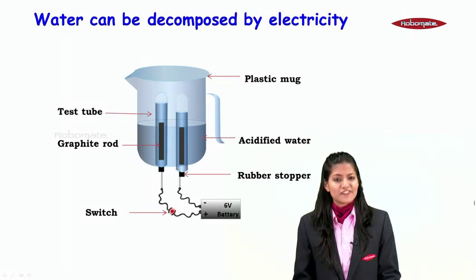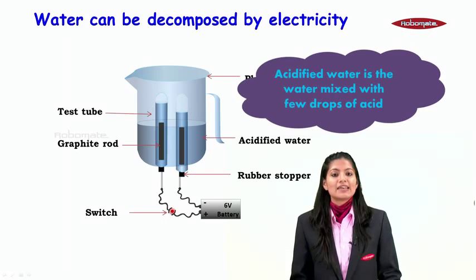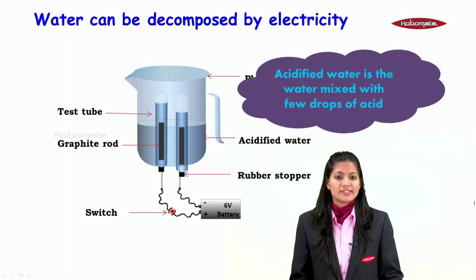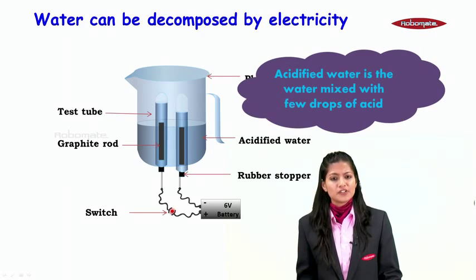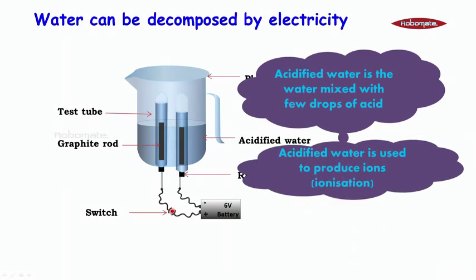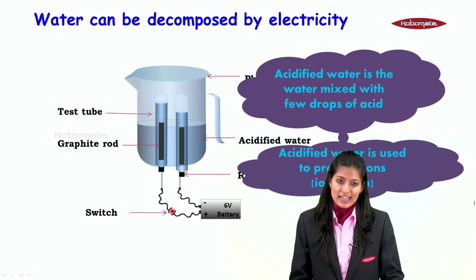But what is this acidified water? Acidified water is the water mixed with few drops of acid. And what is the need for the acidified water? Answer is very simple. Acidified water is used to produce ions, that is for the process of ionization, because when there are ions then only electricity can flow.